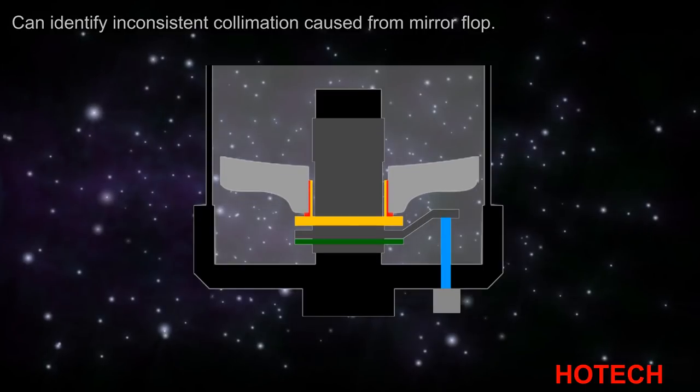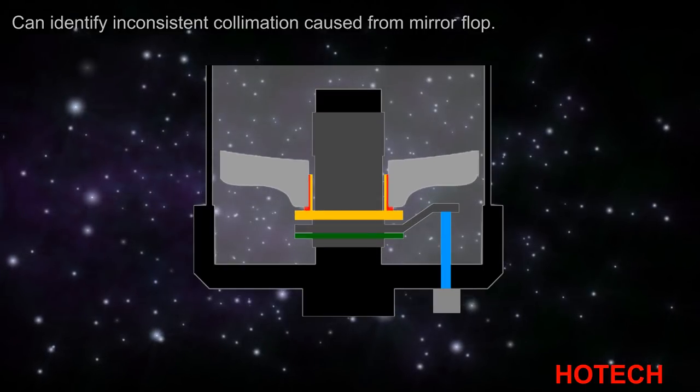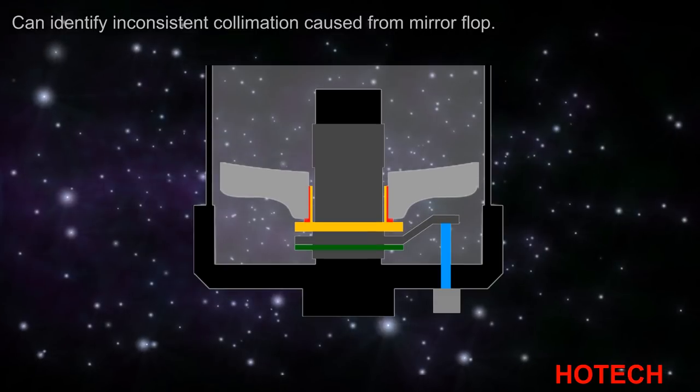For example, the mirror flop is caused by unstable movement of the primary mirror moving along the baffle tube when the mirror is not properly greased and fitted.